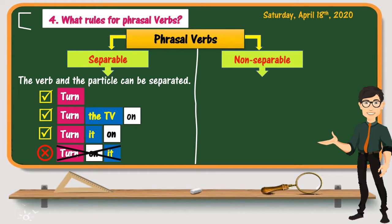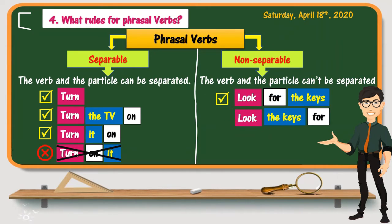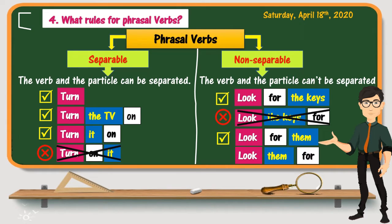Other phrasal verbs are non-separable — the verb and particle cannot be separated. An example is to look for — to look and for are never separated. We say: look for the keys — it is not correct to say look the keys for. If the object is a pronoun, the sentence becomes look for them — we cannot say look them for. The correct form is always look for them or look for the keys.